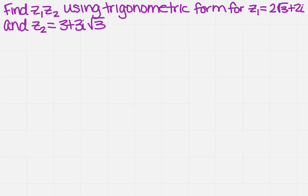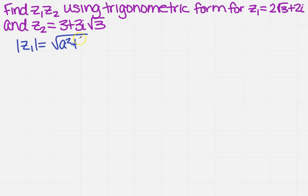Find Z1 times Z2 using trigonometric form, where Z1 equals 2 square root of 3 plus 2i, and Z2 equals 3 plus 3i square root of 3. In order to do this, I need to find the absolute value for each one of these. So the absolute value of Z1 will equal the square root of a squared plus b squared.